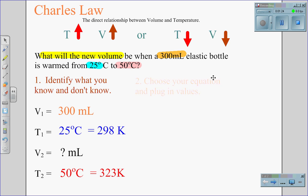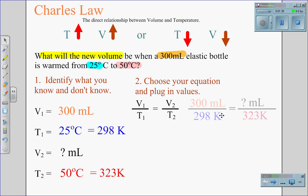We next choose our equation and plug in the values. We choose Charles Law because we have volume 1 over temperature 1 equals volume 2 over temperature 2. Plugging in the values: 300 milliliters over 298 Kelvin equals how many milliliters over 323 Kelvin.